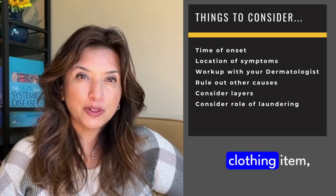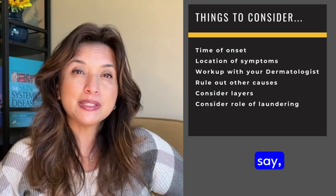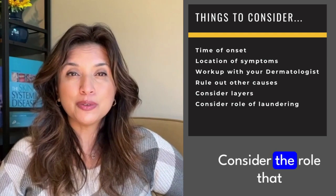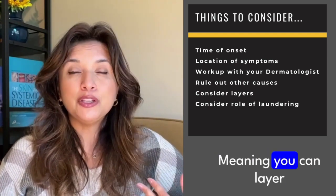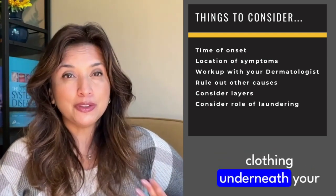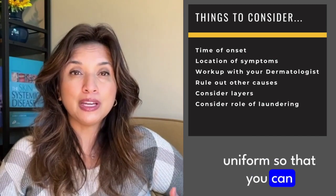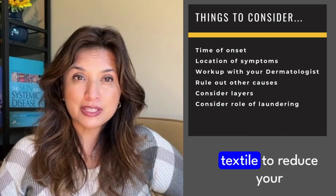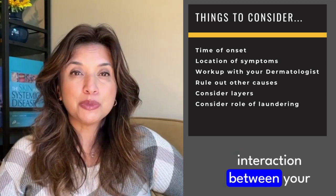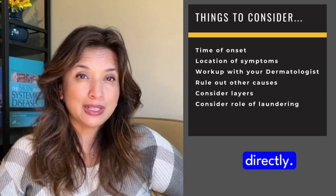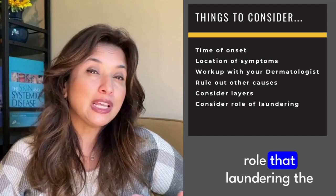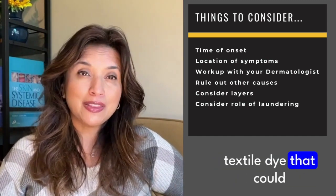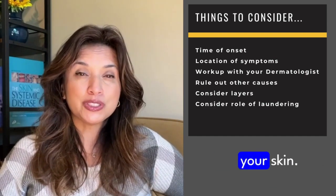If there is a particular clothing item you're suspected of reacting to — say a uniform for a sports team or work — consider the role that layering can play. You can layer clothing underneath your uniform to provide your skin with an added layer of protection from the textile. Also consider the role that laundering the garment could play in reducing the load of textile dye that could be released onto your skin.